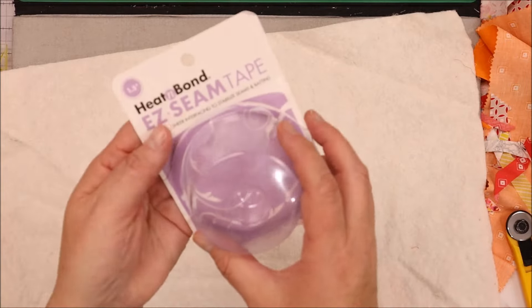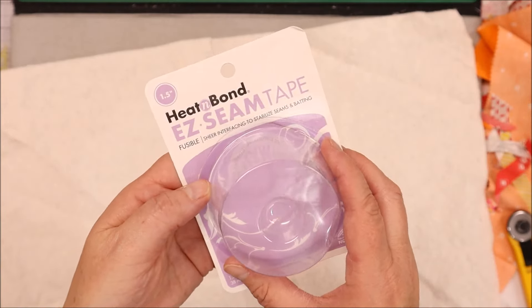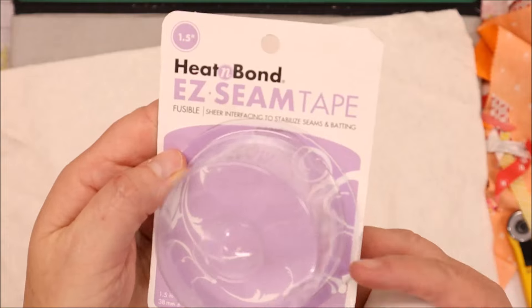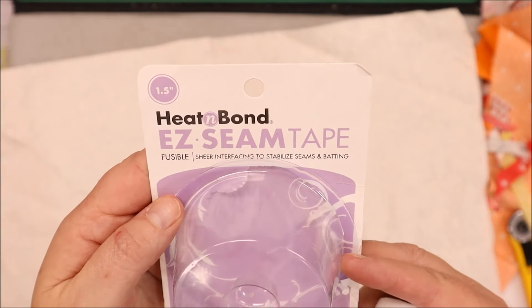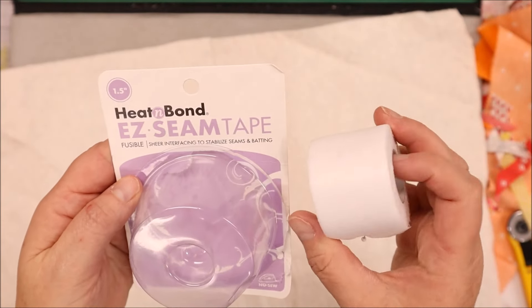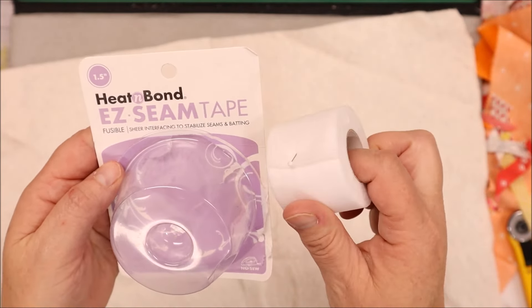So when we butt them up against each other, they are going to match. So I'm just going to place my batting on top and then I am going to trim this one edge and I'm going to repeat that for my other piece.